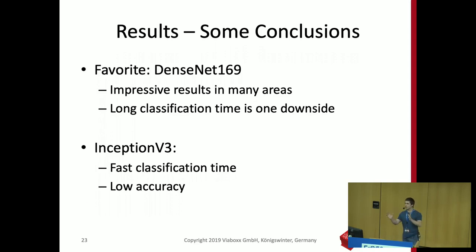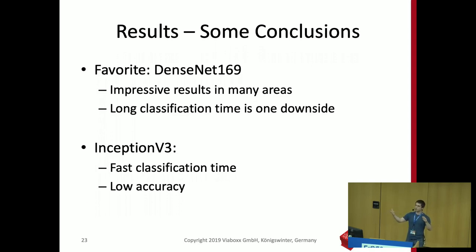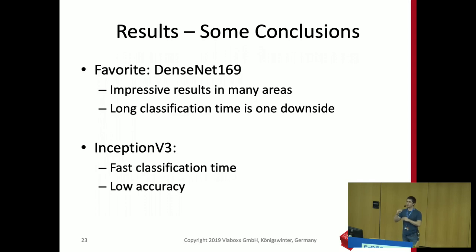After training is done, the model doesn't keep updating unless you train it again. You can have two separate processes: training is happening and producing new models as more data comes in, while inference is running live, taking data and classifying. At the same time it could be training on new data, but it usually makes sense to separate these two, because training takes so much CPU power — and you might be running the classification app on a smaller device or mobile setup.